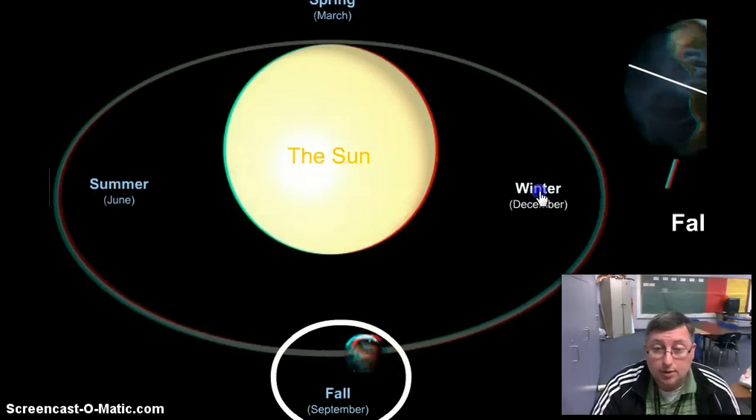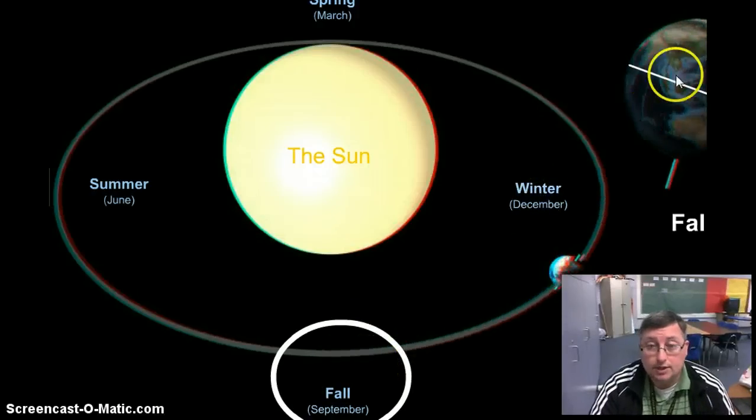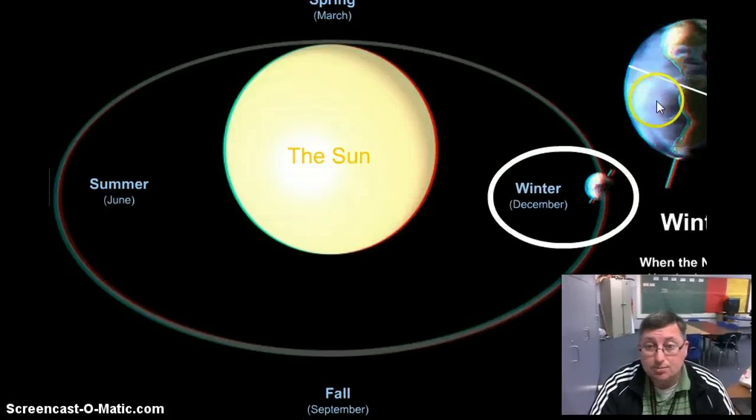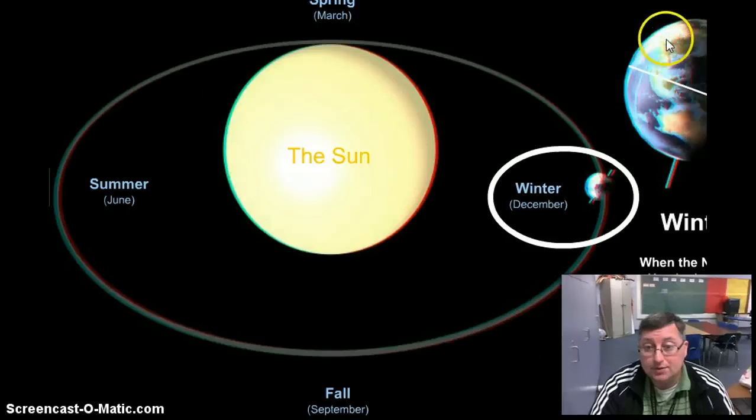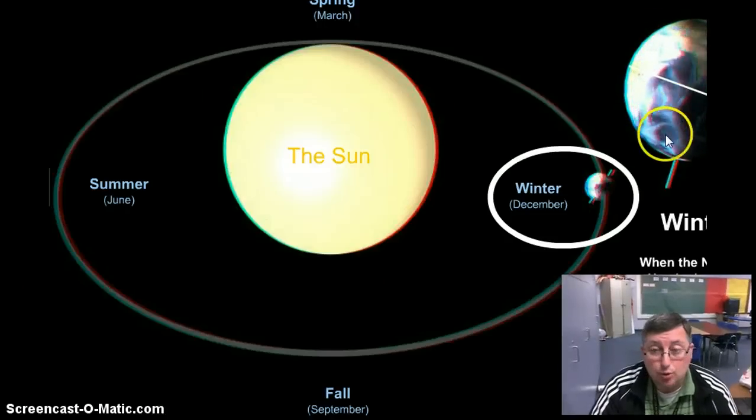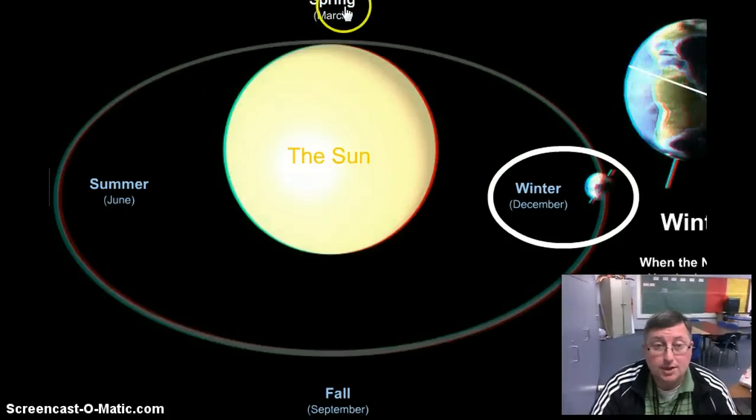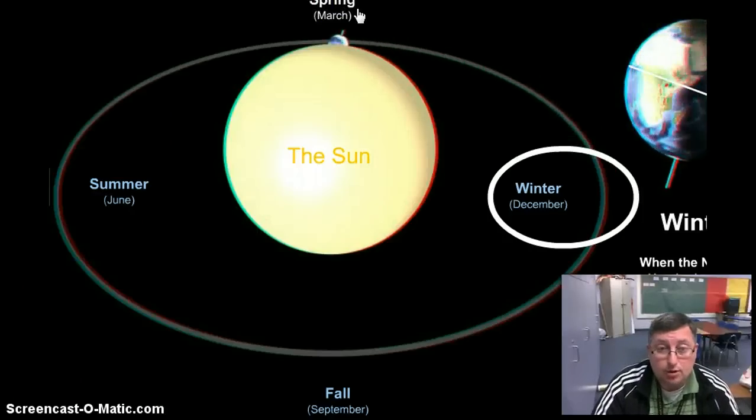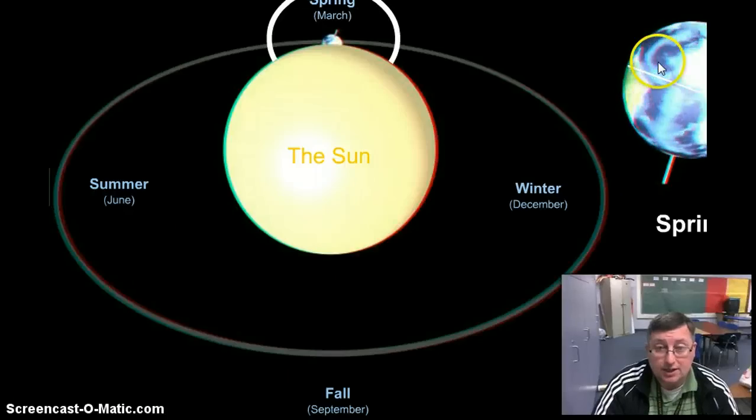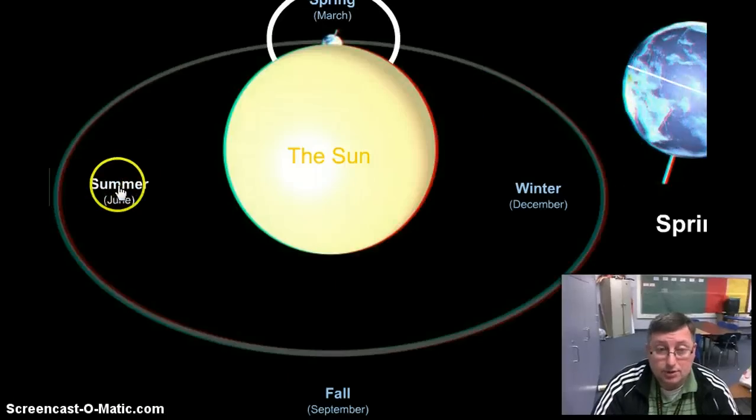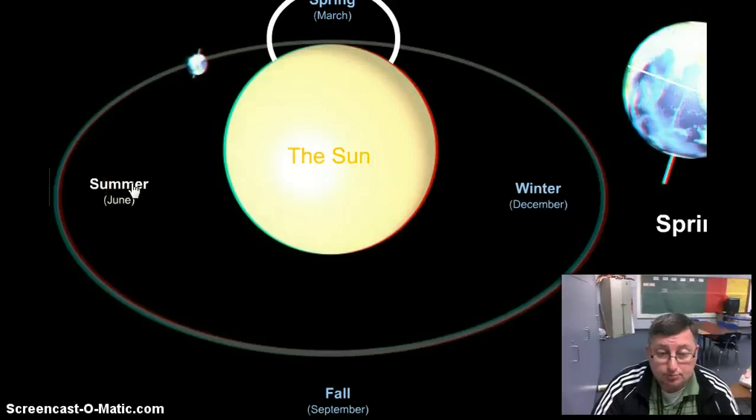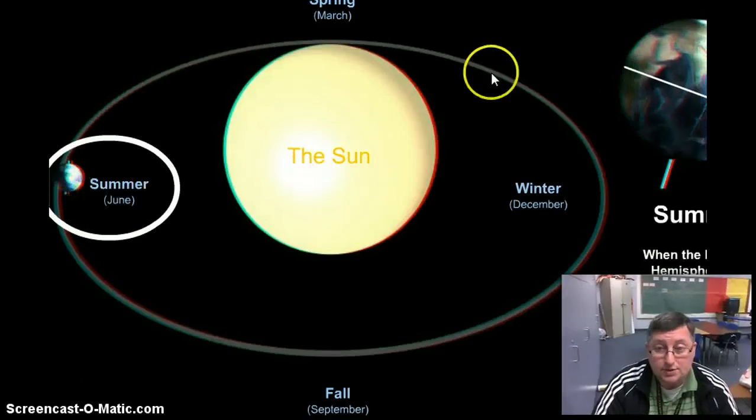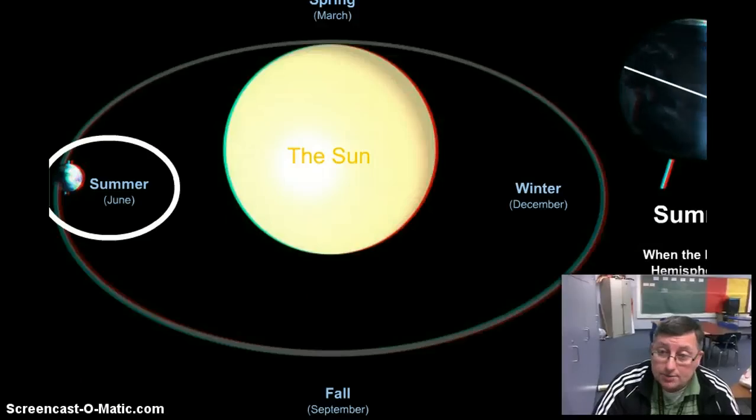And then in winter, if you look at the new picture over here, the southern hemisphere gets most of the sunlight. The northern hemisphere gets some, that's why it's so cold. The Earth is tilted away from the sun. In spring we end up almost similar to in the fall. Both sides are getting equal amounts, and then back at summer.